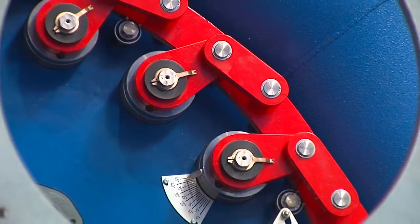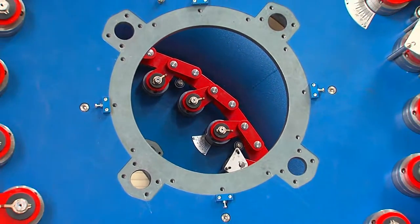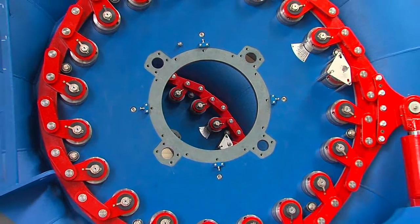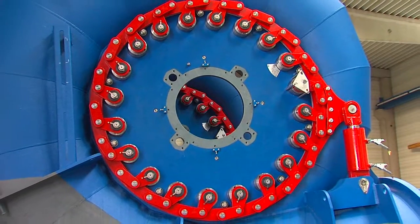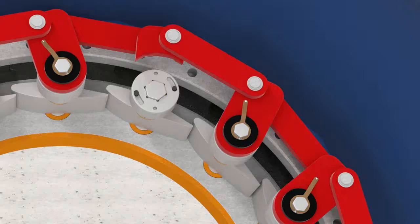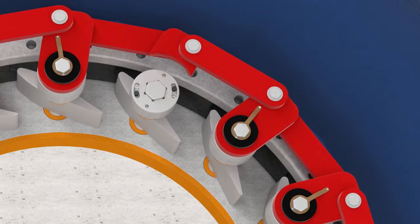The wicket gate system with regulating ring enables exact and simultaneous adjustment of all guide vanes, which in turn control the water flow rate and the power output.